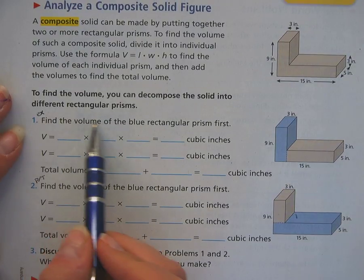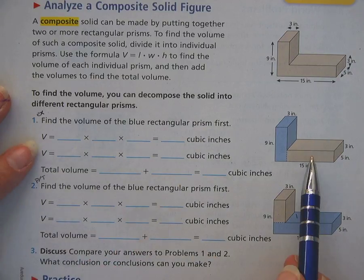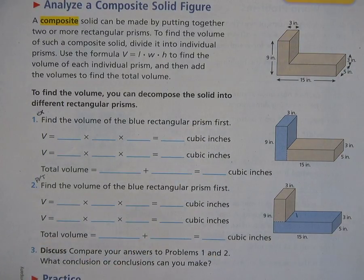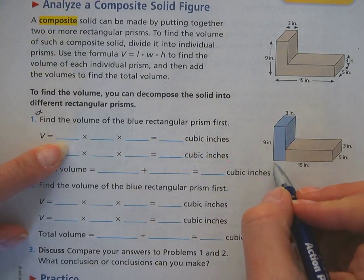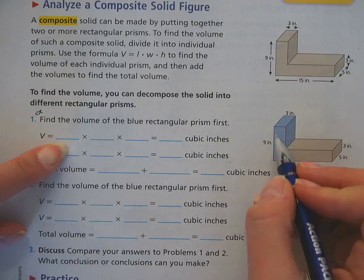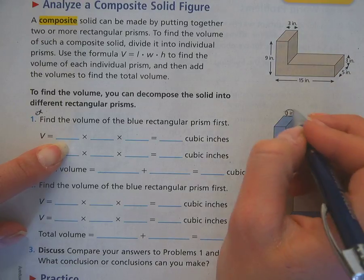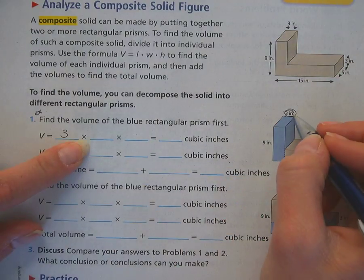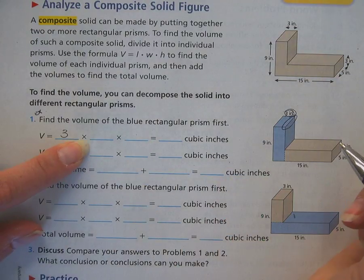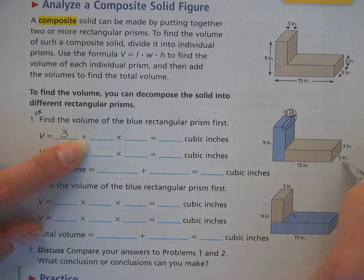Where it says find the volume of the blue rectangular prism first, then you find the volume of the other one, then you put them together. So our first one, our volume of our blue, remember it's length times width times height. So my length, I'm going to say, is three, up here, so I'm going to fill in my length, times width. Width would be this dimension. I don't know exactly what that dimension is, but if I notice it's the same thing here, which is the same over here, which is the same down here, so it's five.